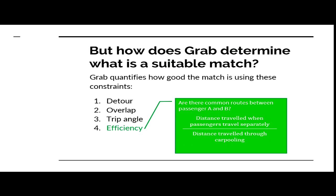Last but not least, we have efficiency. It's quite similar to part two where they talk about overlapping. In Grab, they have an efficiency index where they compare the distance traveled by passengers if they were to travel separately over the distance traveled through carpooling.